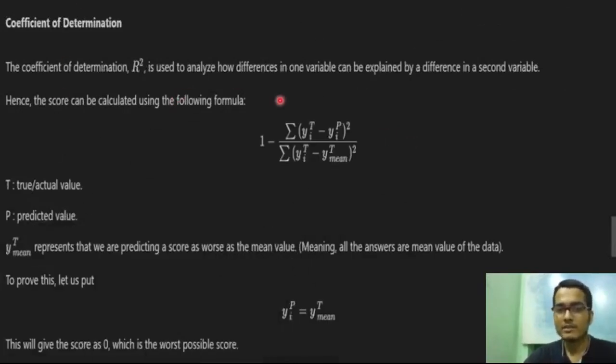It is used to analyze how differences in one variable can be explained by differences in the second variable. So we have a reference variable mean. This way we can calculate our coefficient of determination where t stands for true value and p is for predicted value. We can use the denominator for a reference point. Yt mean represents predicting a score as worse as its mean value, meaning all the answers are the mean value of the data.